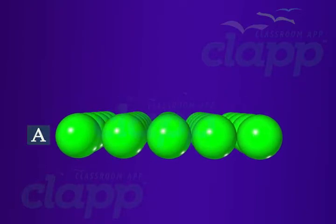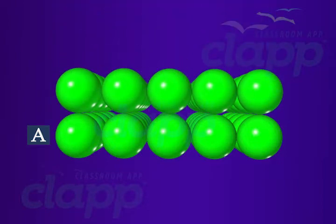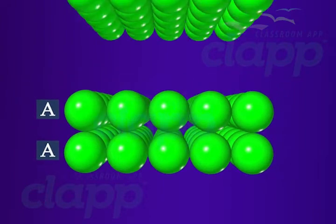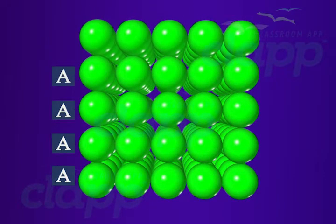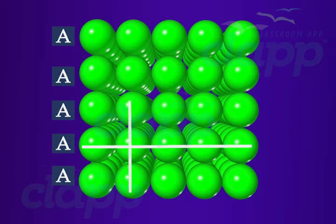Place a second square close-pack layer above the first layer such that the spheres of both the layers align horizontally and vertically. The second layer can also be named as A-type. Similarly, place a few more layers of spheres one above the other. The spheres in all the layers align vertically and horizontally, so this lattice is an AAA-type pattern.